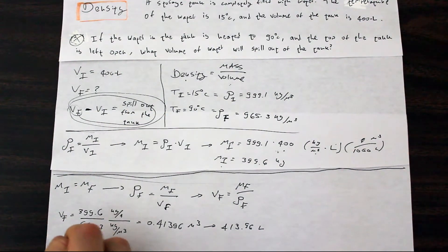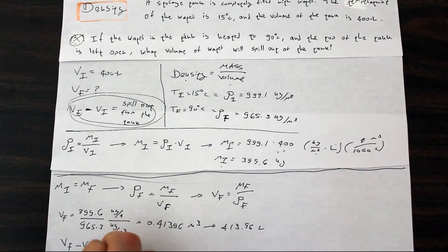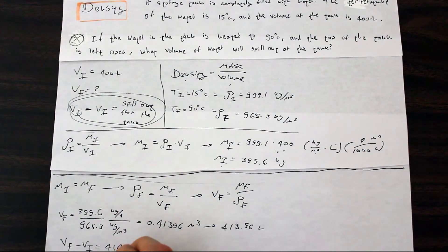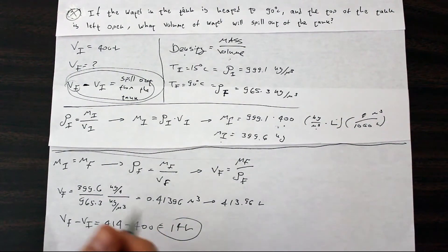Going back to our initial equation, we can say that VF minus VI is equal to 414 minus 400, which is equal 14, which is our final answer.